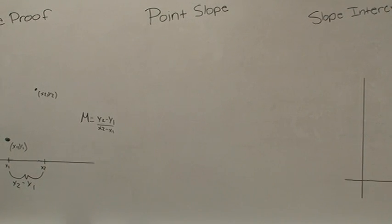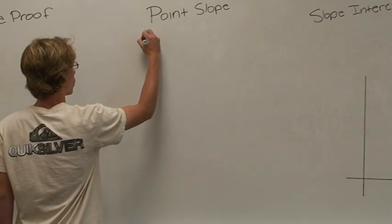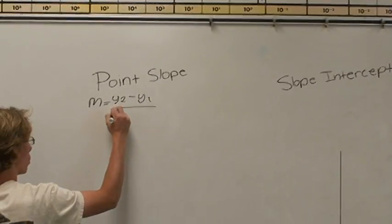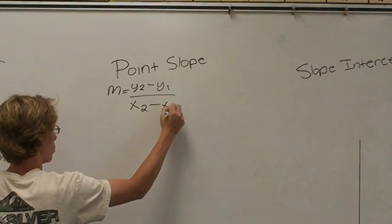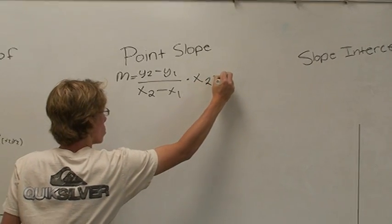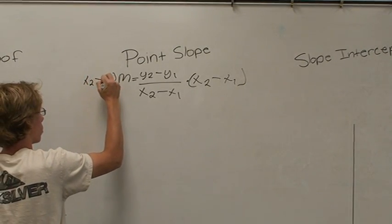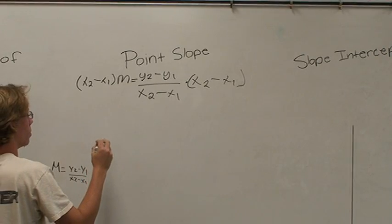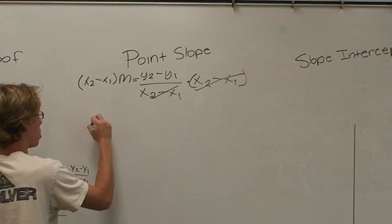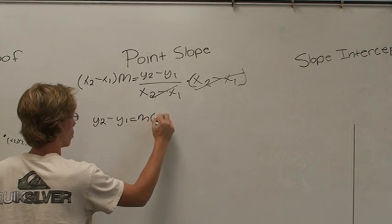Next we have the point slope form that we need to get to. To get there, we use our slope equation, m equals y2 minus y1 over x2 minus x1. We then want to multiply both sides by x2 minus x1. The x2 minus x1 on the right cancel.